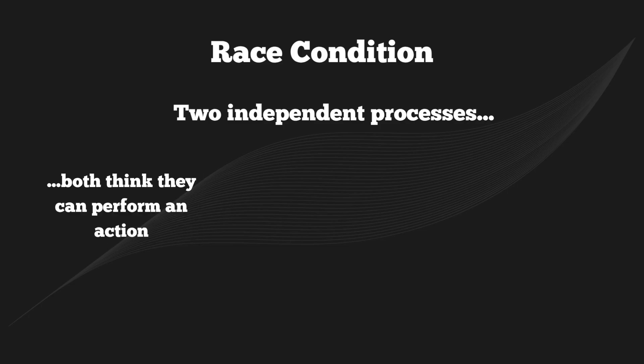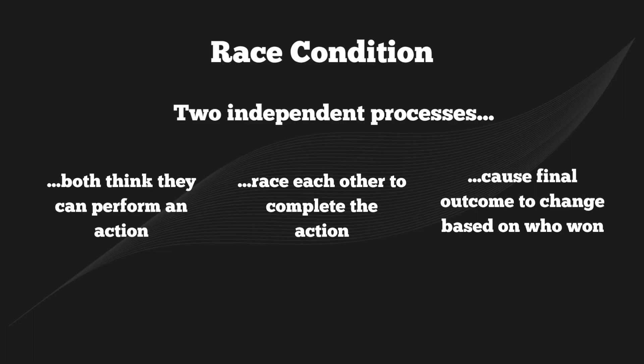This rare confluence of events exposed a latent concurrency bug called a race condition. A race condition happens when two independent processes both think that they can perform an action, race to do it first, and the final outcome changes based on who wins that race — with no lock in place to prevent the wrong ordering. It is a timing-dependent bug where the code works most of the time, in this case probably over 99%, but fails under a rare sequence of events. While on the surface it was a DNS problem that caused DynamoDB to become unavailable, the root cause was actually a race condition that led to the DNS problems.